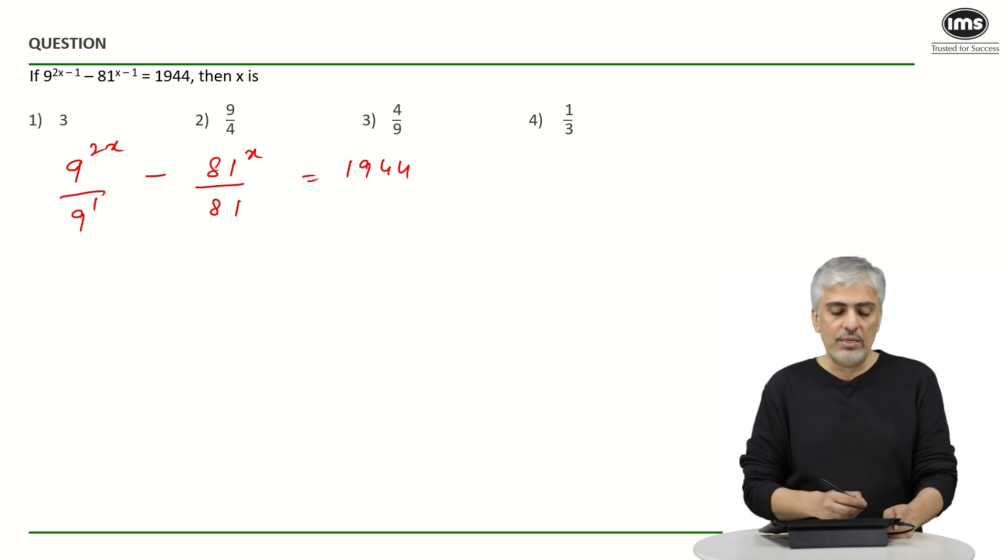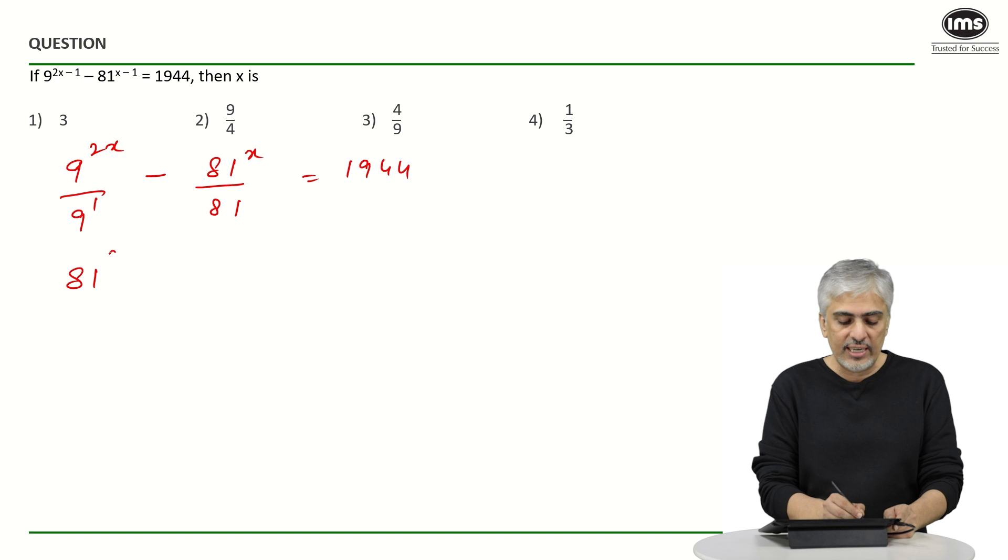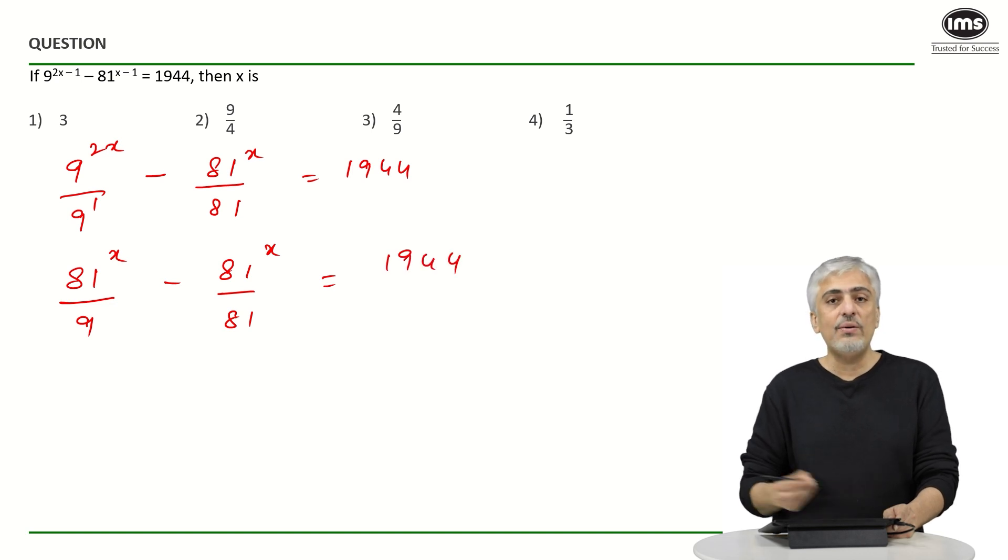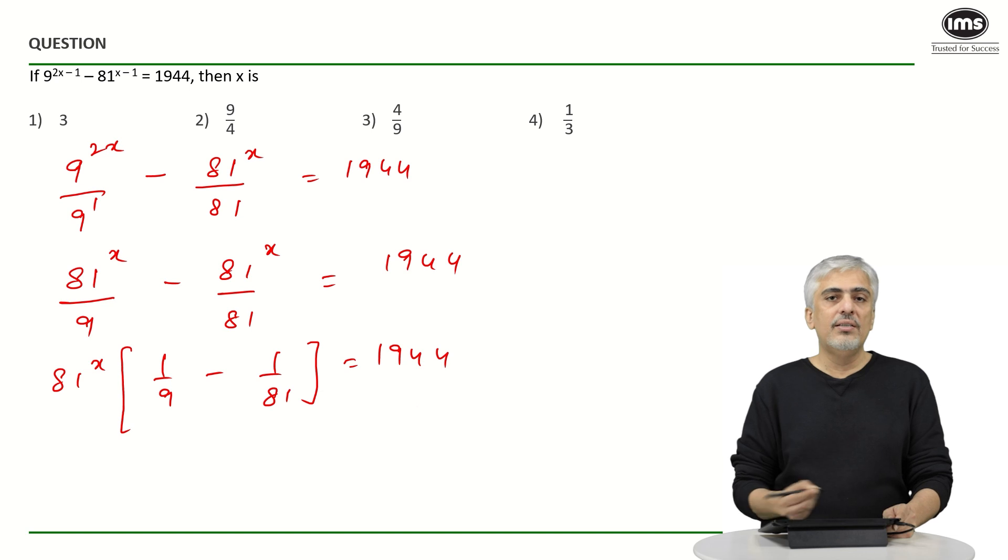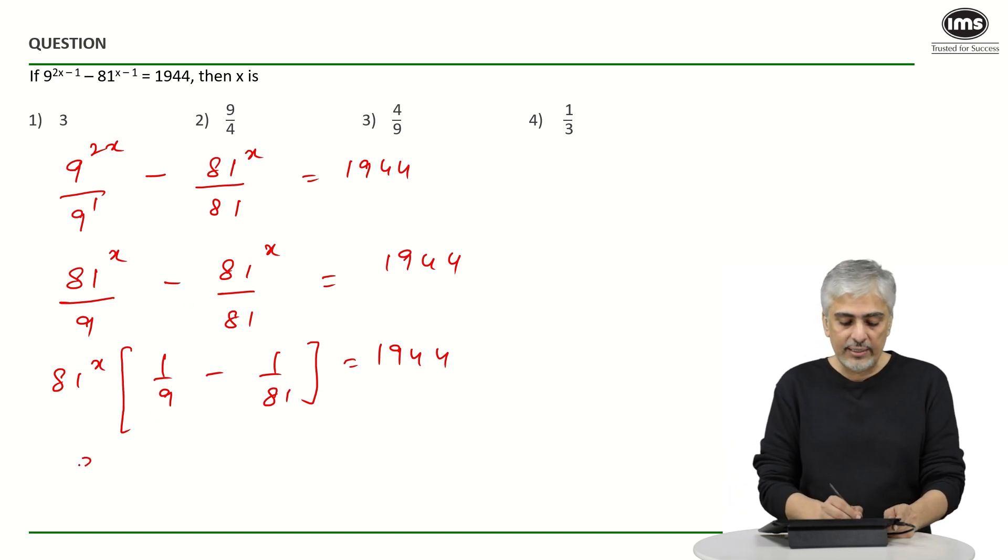9 raised to 2 we know is 81. So this will become 81 raised to x upon 9 minus 81 raised to x upon 81 is 1944. I can take 81 raised to x common. So I will be left with 1 by 9 minus 1 by 81.